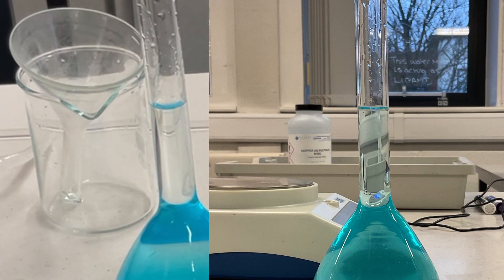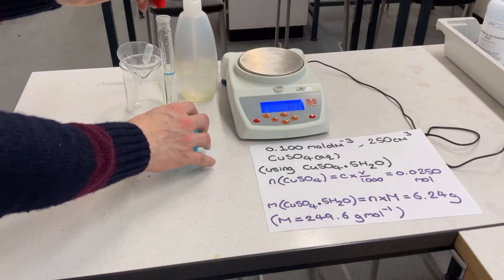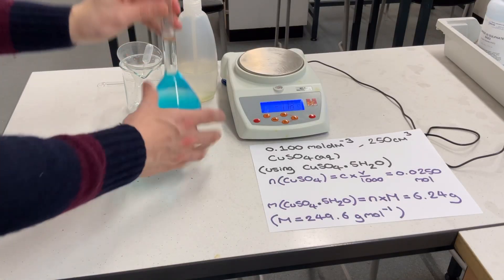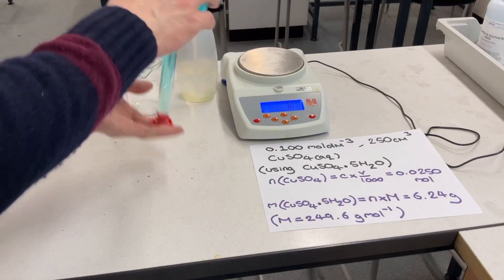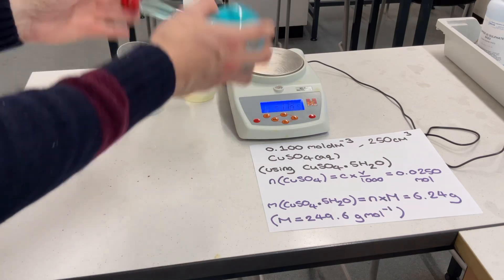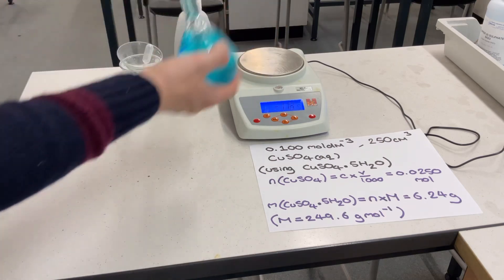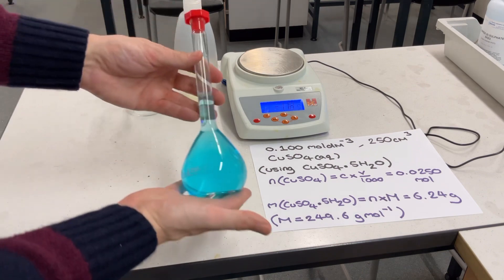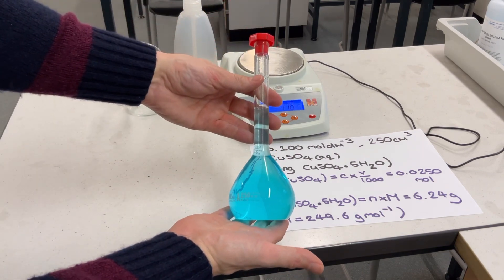Step 6: To finish, we stopper and invert the flask so that the solution is mixed and it has a uniform concentration. We don't typically suggest shaking the flask at this stage because it isn't a cocktail.